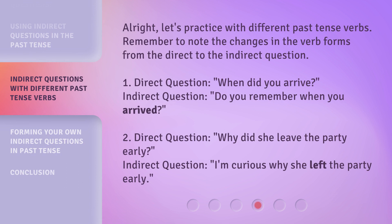Alright, let's practice with different past tense verbs. Remember to note the changes in the verb forms from the direct to the indirect question. First, Direct Question: "When did you arrive?" Indirect Question: "Do you remember when you arrived?" Second, Direct Question: "Why did she leave the party early?" Indirect Question: "I'm curious why she left the party early."